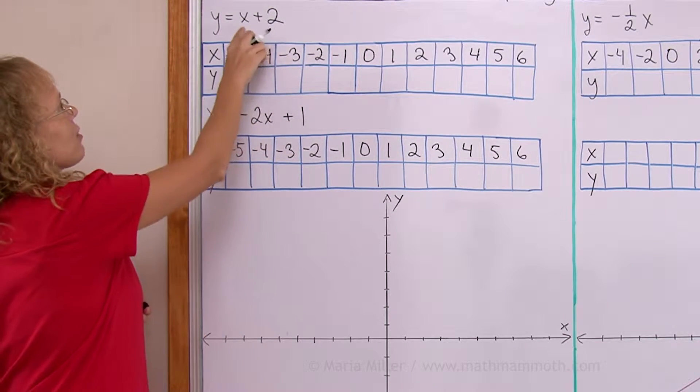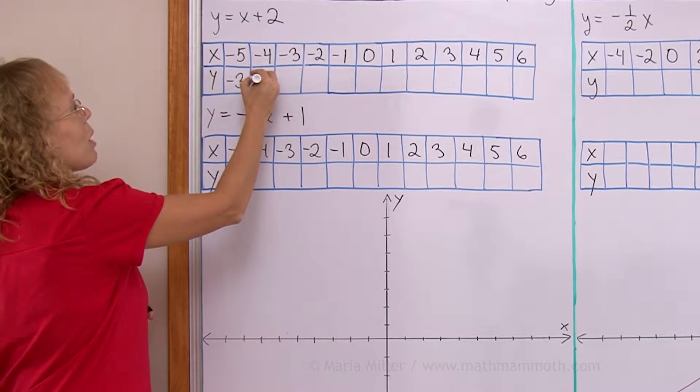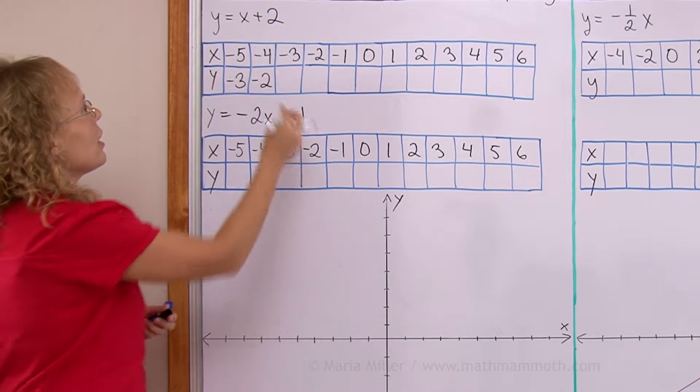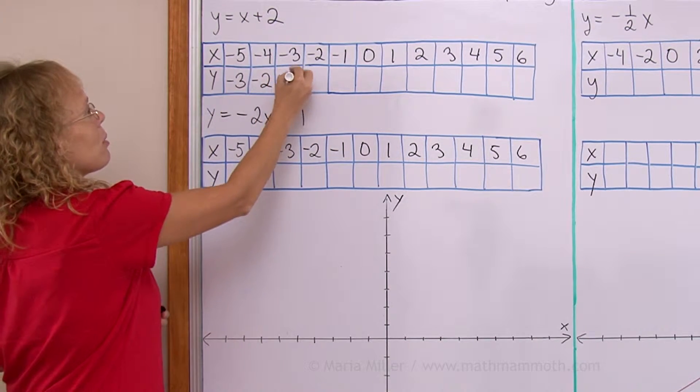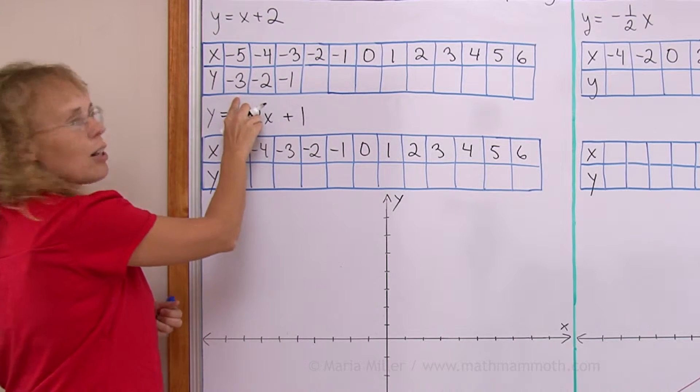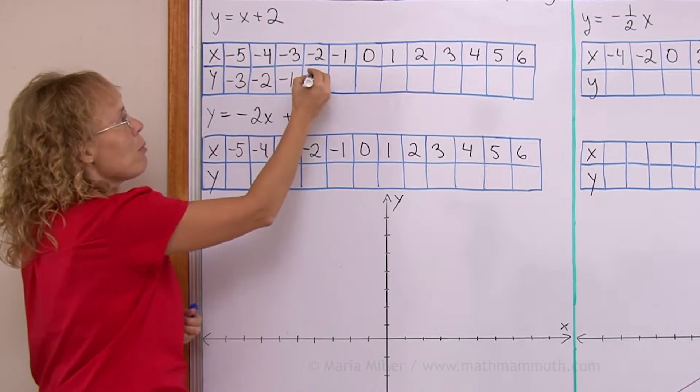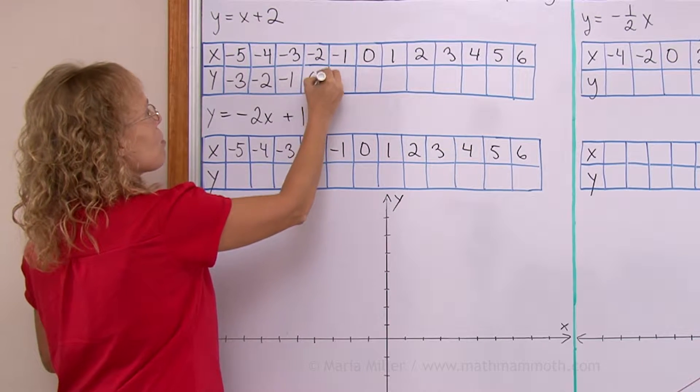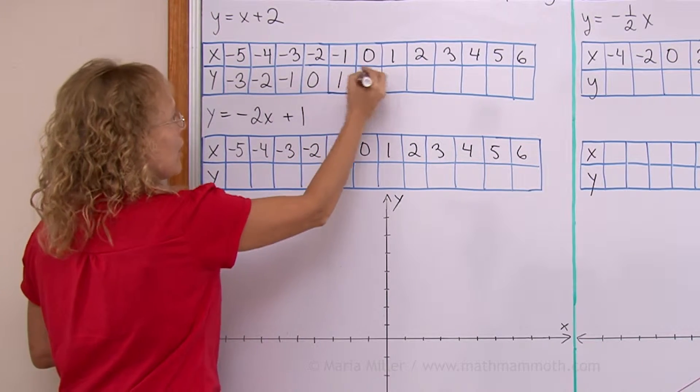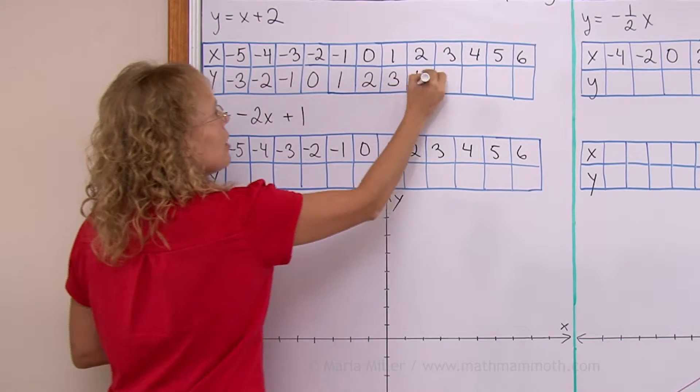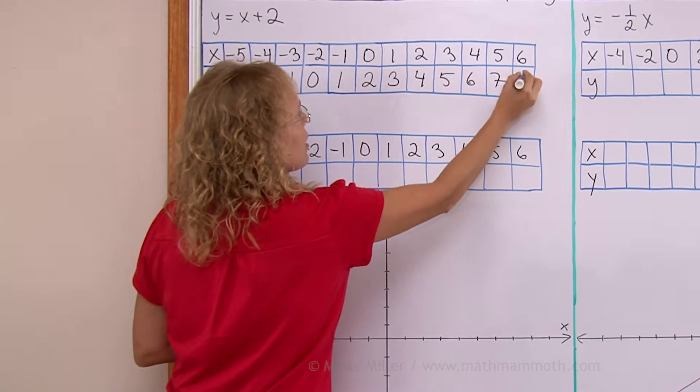Similarly, if x is negative 4, I put it here, I get y would be negative 2. If x is negative 3, y would be negative 1, and so on. You can see here how the y values are increasing by 1. So my next value is 0 and then 1, 2, 3, 4, 5, 6, 7, and 8.